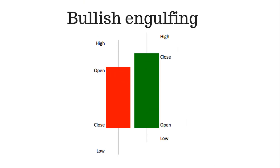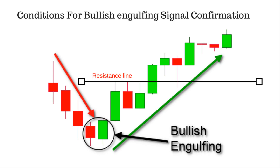The bullish engulfing candlestick pattern is a bullish reversal pattern usually occurring at the bottom of a downtrend. The pattern consists of two candlesticks: a smaller bearish candle followed by a larger bullish candle. Conditions for bullish engulfing signal confirmation — first condition: it should be formed after a downtrend. Second condition: a bearish candle followed by a bullish candle.